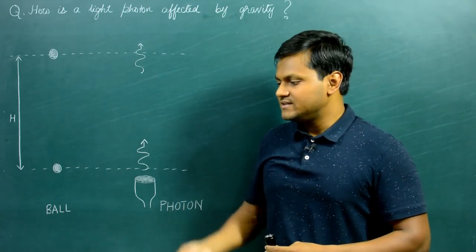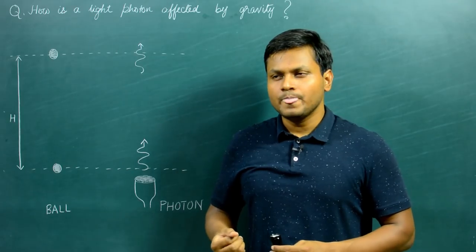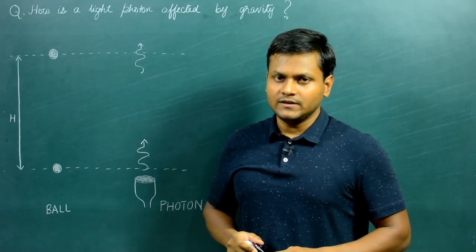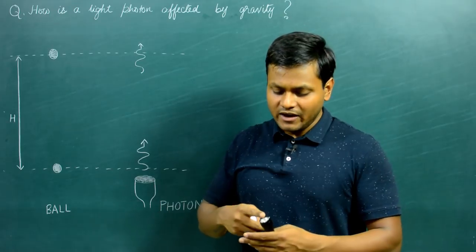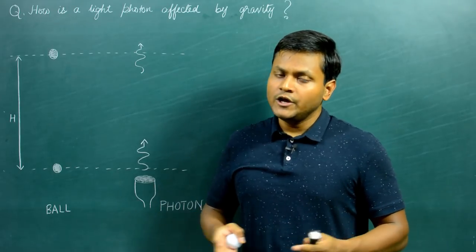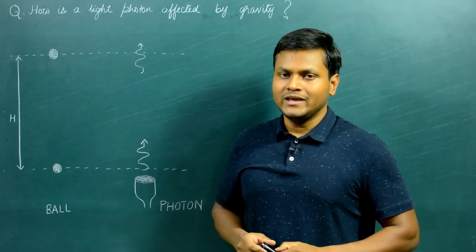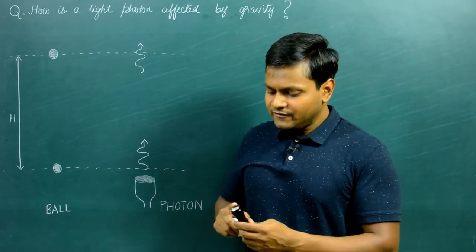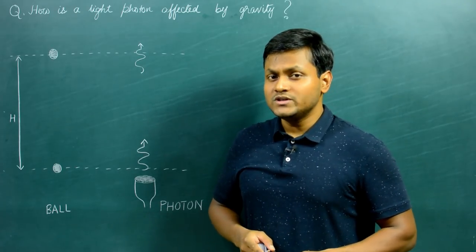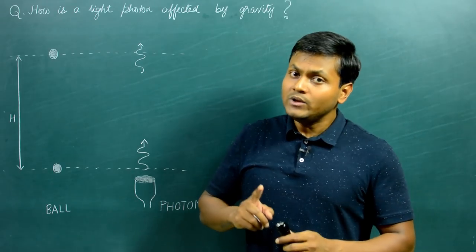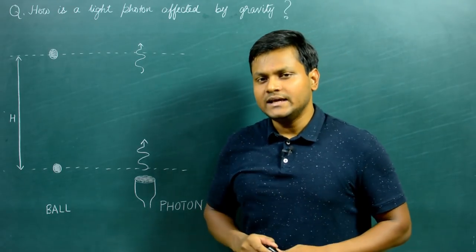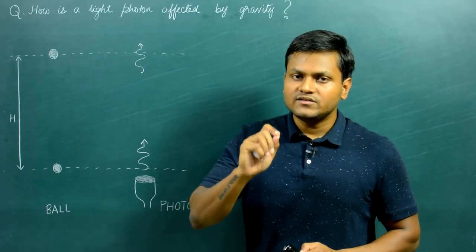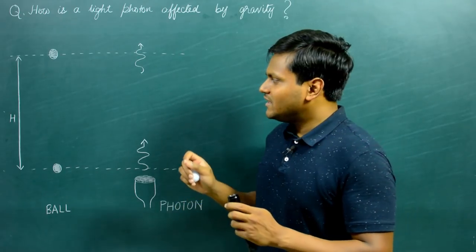So if these light photons, which have mass, are affected by gravity, will they slow down as they move up — just like the ball? Well, that is forbidden by relativity. Special relativity tells us that light travels at the velocity of light no matter what inertial frame you're looking from — it is a constant of nature. So the light photons will not lose velocity, but they will lose energy, not as a decrease of velocity but rather as a change in frequency.